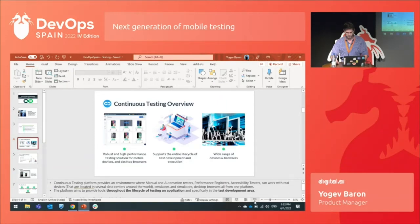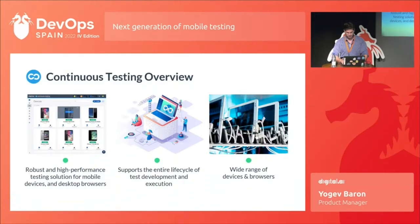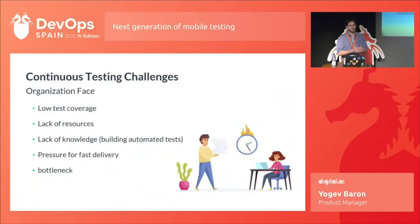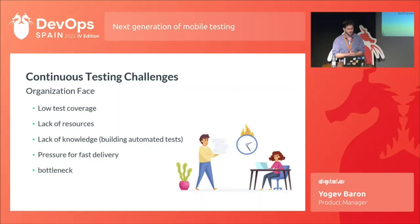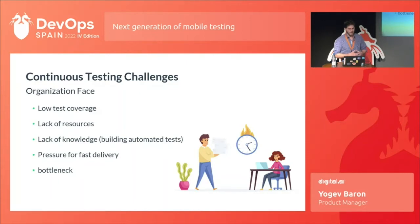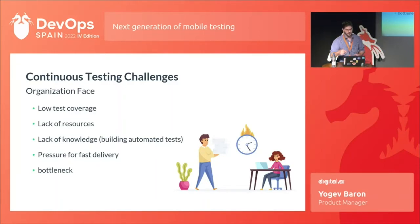I want to talk about some continuous testing challenges organizations face these days. Organizations want to keep high quality test coverage. They have a lot of changes and versions they need to test, but often lack the resources and people to do it. And even when they have people to test, many don't have enough technical knowledge. That leads to high pressure for fast delivery and a huge bottleneck in the DevOps process.